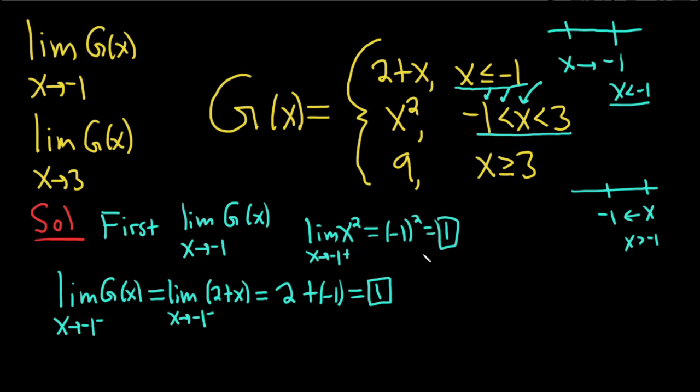So because both of these are the same, we are in really good shape. That means the regular limit is also equal to 1. So the answer here is 1 for the first part. If we had gotten a different answer, like if this was 1 and this was 5, then you would have put DNE here for the first question.